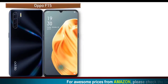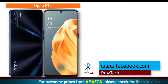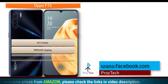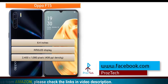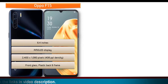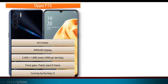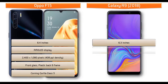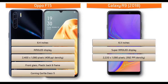Looking at the display, Oppo F15 has a 6.4-inch screen with AMOLED display at a resolution of 2400 x 1080 pixels, 408 PPI density, and Corning Gorilla Glass 5 protection. Whereas Galaxy A9 is a 6.3-inch device with Super AMOLED display at 2220 x 1080 pixels resolution and 392 PPI density.